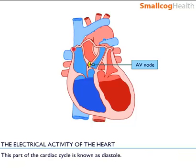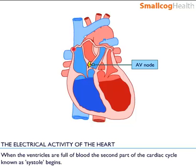This part of the cardiac cycle is known as diastole. When the ventricles are full of blood, the second part of the cardiac cycle, known as systole, begins.